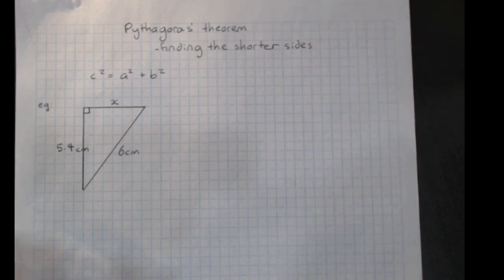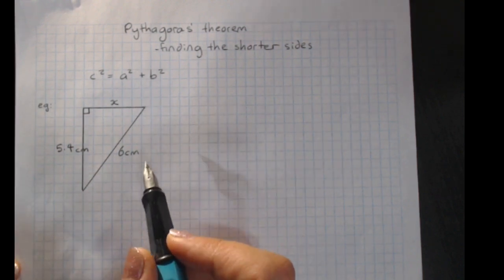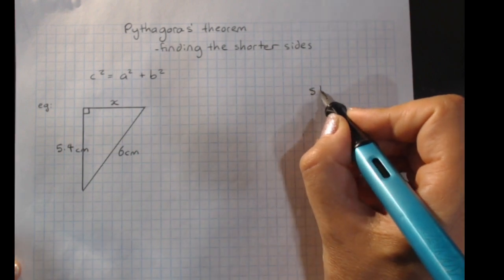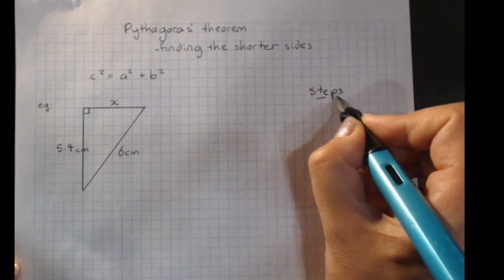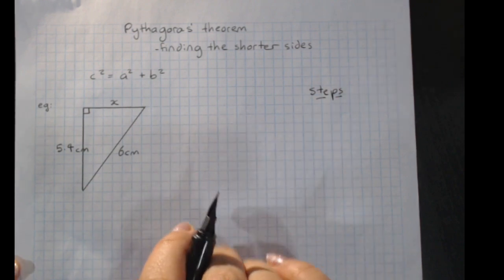So this is our second really big important c-grade skill here. First one was finding the hypotenuse, now it's finding the shorter sides. And I'm going to write down the steps, and we'll do the working here. Perfect working is very important.